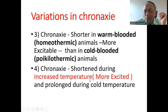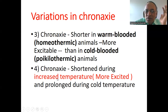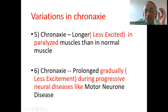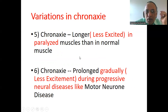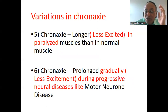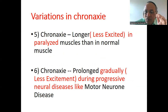Chronaxy is shortened during increased temperature, so at higher atmospheric temperature the muscle is more excitable, and it is prolonged during cold temperature. Chronaxy is longer in paralyzed muscles — when a person gets hemiplegia or paralysis, the muscles are less excited because Chronaxy time is more. Chronaxy is prolonged gradually after two, four, and six months. Less excitability also occurs during progressive neural or motor neuron disease, where the myelin sheath degrades and nerves are damaged, naturally reducing muscle excitability.